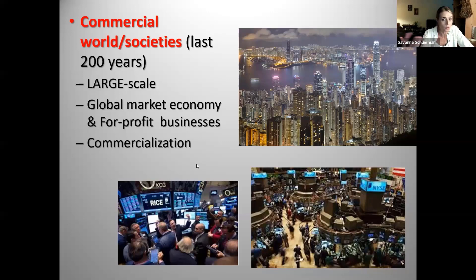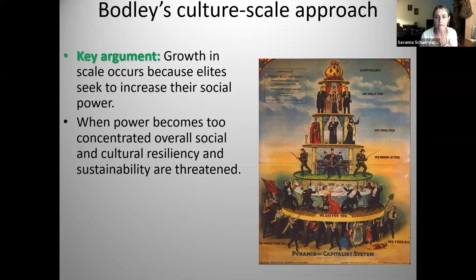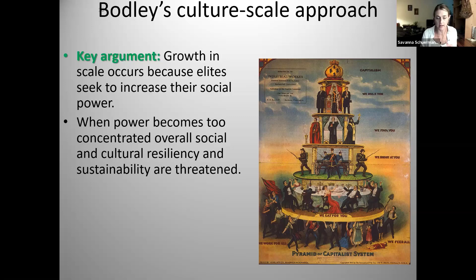Either way, it's really hard to correct this maladaptive behavior once it's begun. Bodley's key argument is that this growth in scale — becoming larger, more complex — occurs because elites seek to increase their social power. When power becomes too concentrated, you have too few people making choices that affect all of us. When power is too concentrated, overall social and cultural resiliency, the well-being of the broader society, and sustainability become flattened. Leaders make decisions that might be good for them individually but not for the broader social and environmental good.